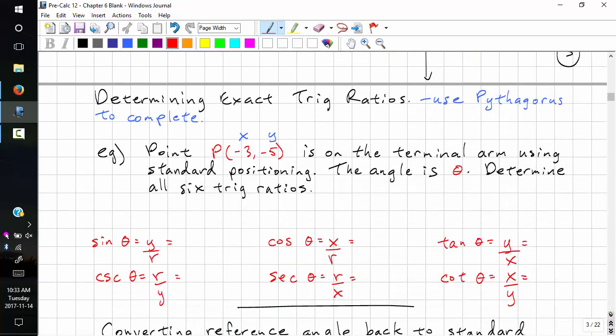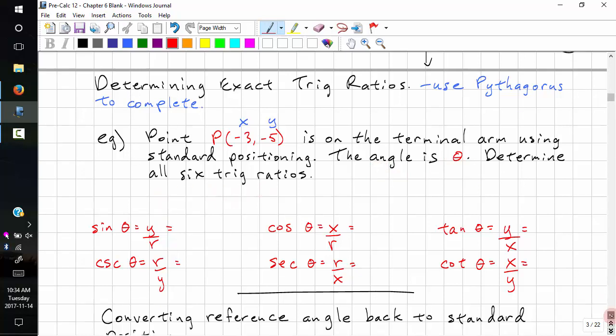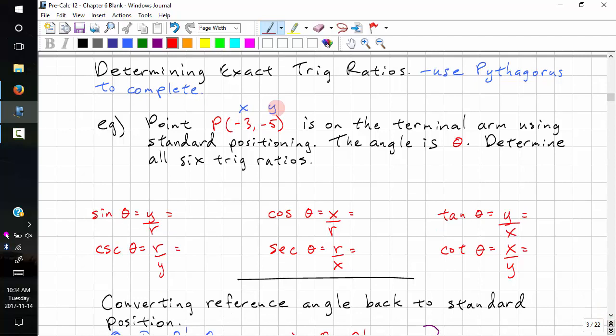Another problem is determining the exact trig ratios, and we use Pythagoras to do this. Say we have a point, negative 3, negative 5 on the terminal arm using standard positioning. This angle is theta. Determine all six ratios. We have x, we have y. We need to figure out what r is. R is the square root of negative 3 squared plus negative 5 squared.